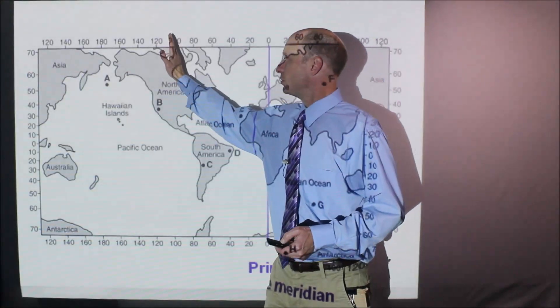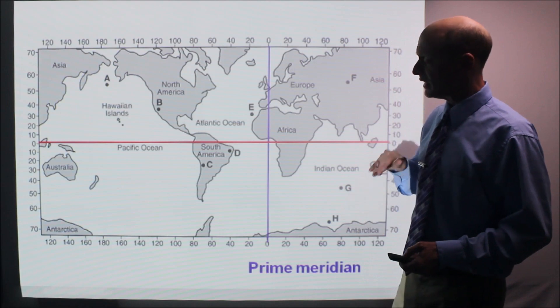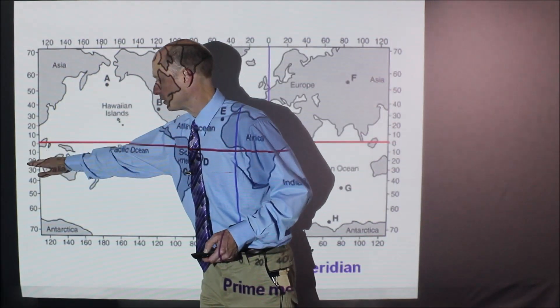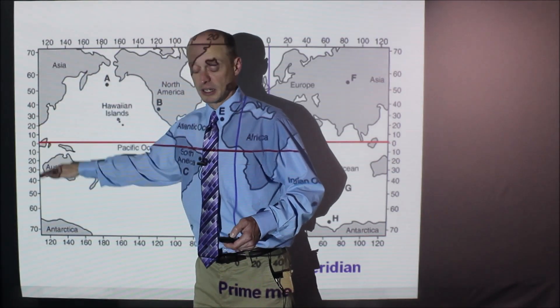So that's a hundred degrees west longitude. These are all east, all of these numbers here. And then here I drew in the equator in red. So all of these numbers, this is 10 degrees south, 20 degrees south, 30 degrees north, 40 degrees north because those are all compared to the equator.